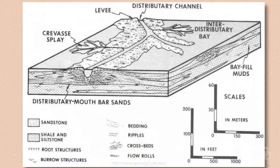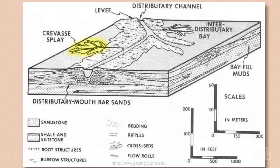Here's another block diagram that shows some additional environments on a fluvially dominated delta, like the Mississippi. You have the distributary channels. You have levees, which are right next to the channels. Levees are created during flood events — they build up a mound that makes the channel bigger and can help prevent flooding. There are also crevasse splays, which are places where the levee has been breached. You can see one right here.